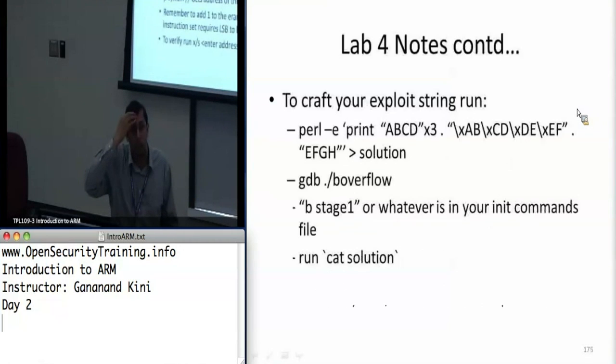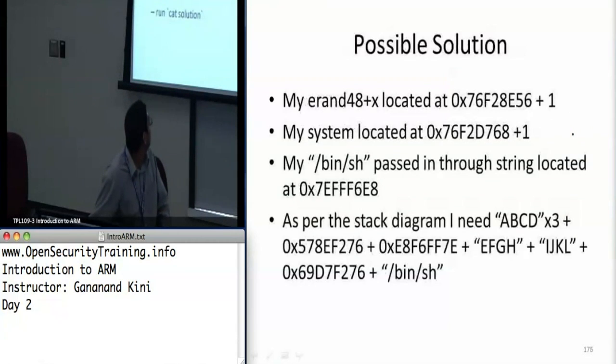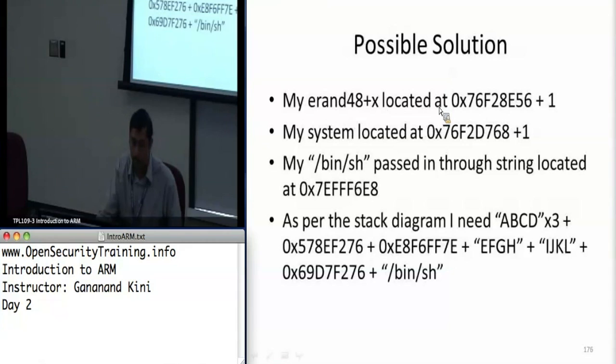Alright, I guess I'll go over the solution now. So these are sort of the values on my VM that I had as far as the addresses for each of these methods are concerned. For me, LDRD48 was located at this address and SYSTEM was located at this address. And I actually passed the /bin/sh string through the input string and that was also located on the stack in the 7E space.